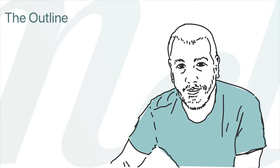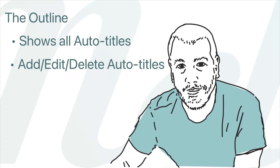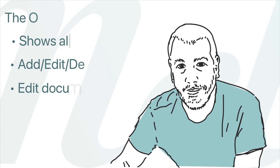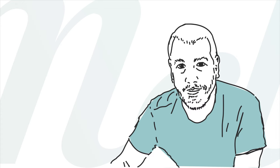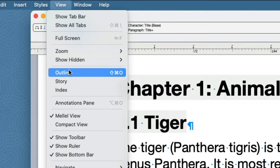The outline is a pane in Melel's Document window that shows all the Autotitles in your document and allows you to add and edit Autotitles. In addition to that, you can also make large scale edits to your document by reordering and deleting big sections of the document. To see the outline, choose View Outline.